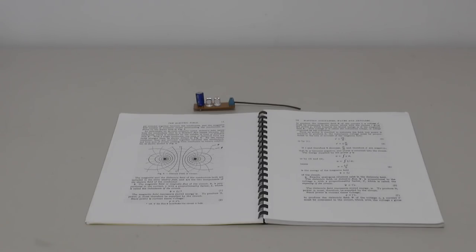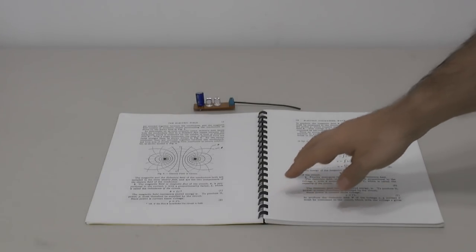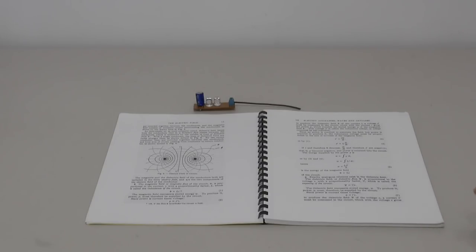If you look at Charles Proteus Steinmetz's elementary lecture book, he defines radiant energy, or would say he understands the way radiant energy is working, and defines it as a dielectric field.